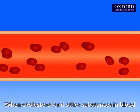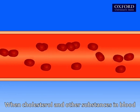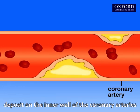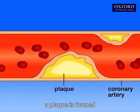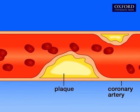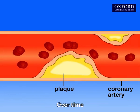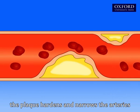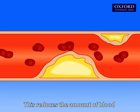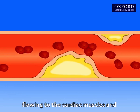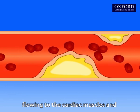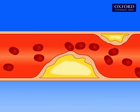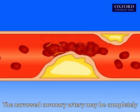When cholesterol and other substances in blood deposit on the inner wall of the coronary arteries, a plaque is formed. Over time, the plaque hardens and narrows the arteries. This reduces the amount of blood flowing to the cardiac muscles and causes coronary heart disease.